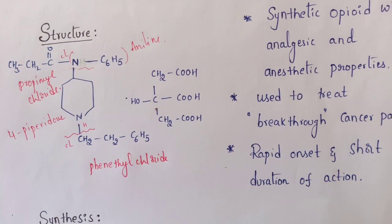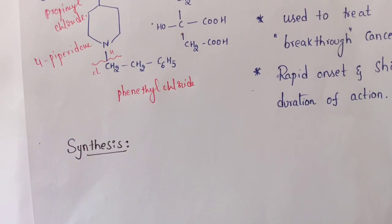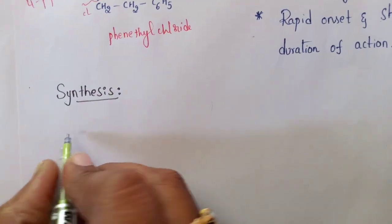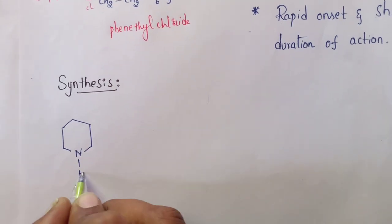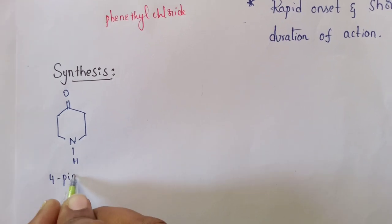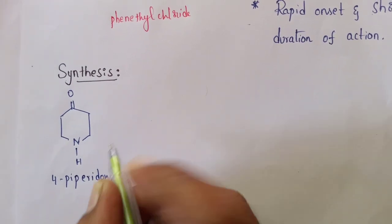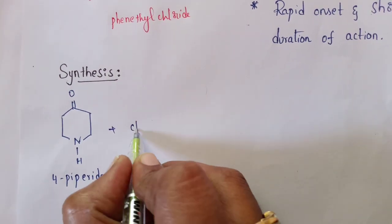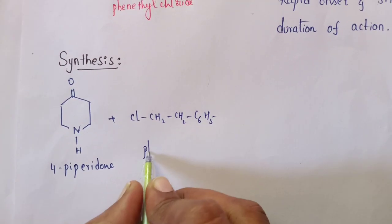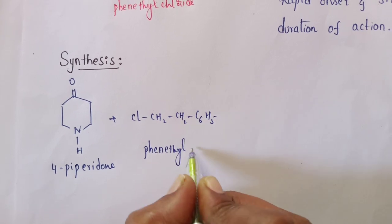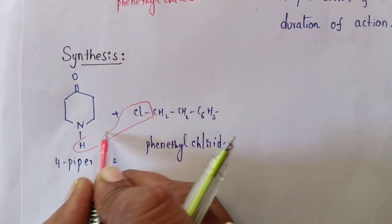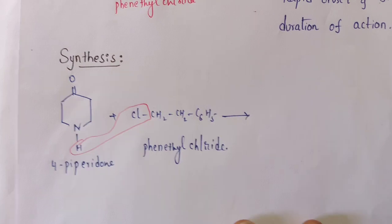Coming to the detailed synthetic steps: the starting material is 4-piperidone — piperidine substituted at the fourth position with a ketone. This 4-piperidone is treated with the second starting material, phenethyl chloride. There is a loss of HCl, and both structures are joined together, attaching the phenethyl group (–CH₂CH₂C₆H₅) at the nitrogen of piperidone.